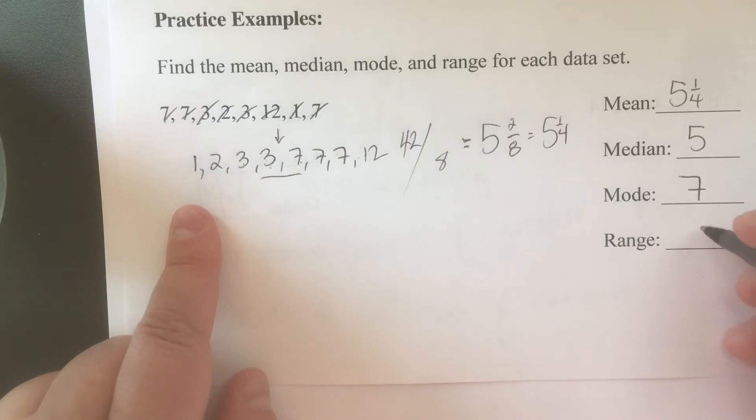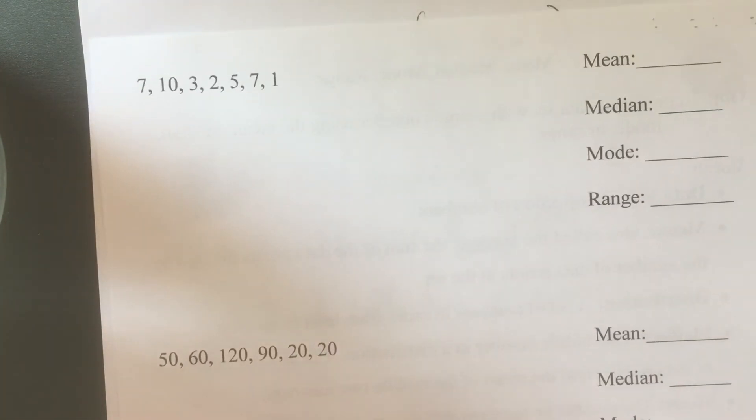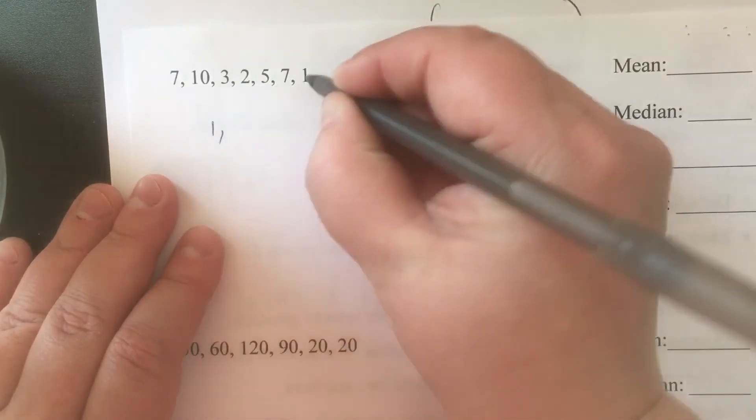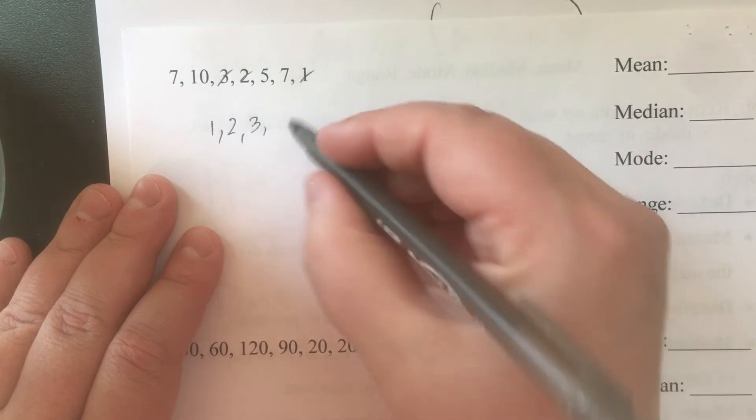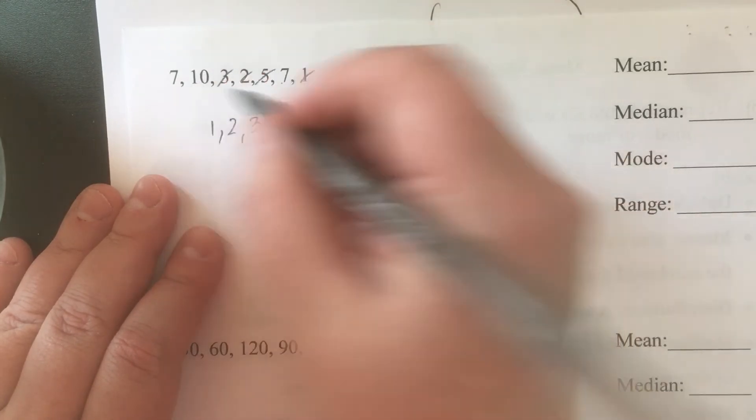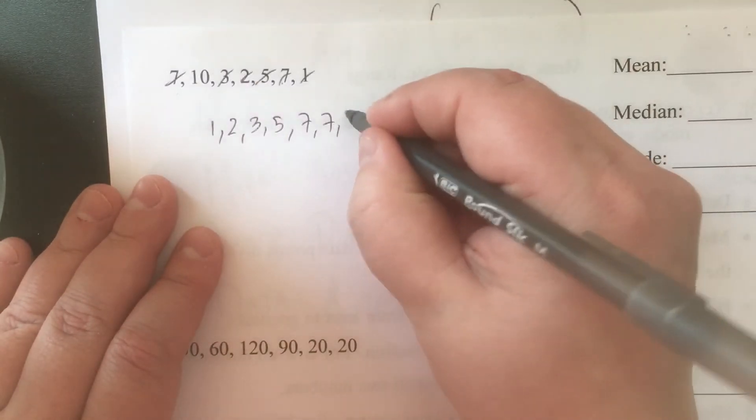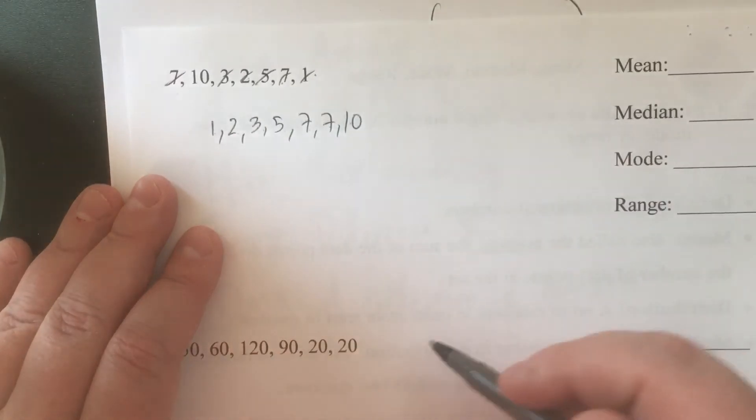Alright, so let's start by putting our numbers in order: 1, 2, 3, 5, two 7s, another 7, and 10. Let me double check: 1, 2, 3, 4, 5, 6, 7 and 1, 2, 3, 4, 5, 6, 7. There we go.